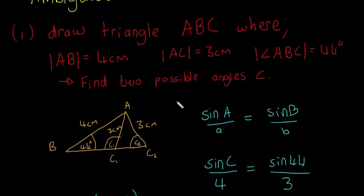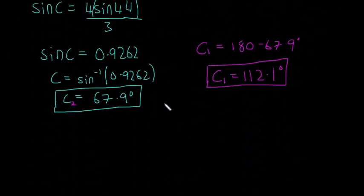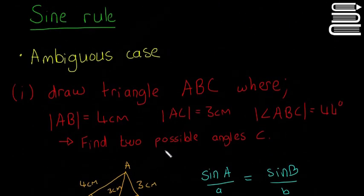And that's how you solve a problem if it says anything about the ambiguous case. So if it says two possible angles, then you should note an ambiguous case question. You should use this method here to solve it. So again, hopefully that made sense, and we're going to look at how to get the area of triangles in the next video.